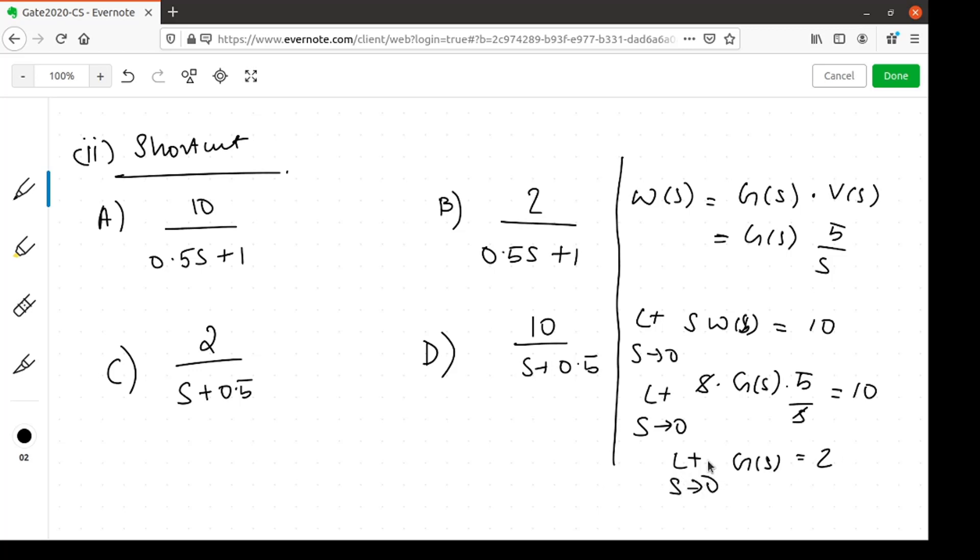Now, we will check each of the options to see which satisfies this condition. We just substitute s equal to 0 in each of the options. If we substitute s equal to 0 in option a, the answer will be 10, so that is not the correct option. Next if we substitute s in option b, we will get 2 which is a possible correct option. If you check option c, the answer is 4, this is again wrong. If you check option d, the answer is 20, so this is again wrong. So, the correct option is option b.